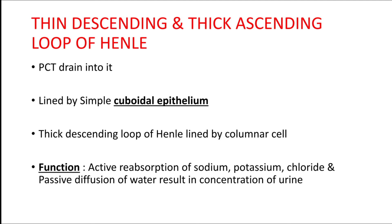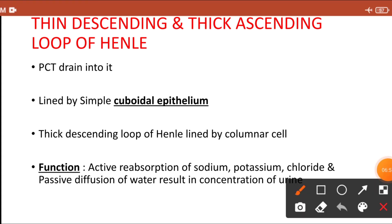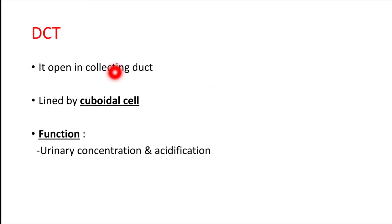The loop of Henle is divided into two portions: the descending portion, which is thin, and the ascending portion, which is thick. The proximal convoluted tubule drains into the loop of Henle. The thick ascending limb of the loop of Henle is lined by columnar cells. The function of the loop of Henle is active reabsorption of sodium, potassium, and chloride, and passive diffusion of water, concentrating the urine.